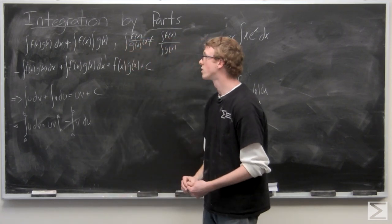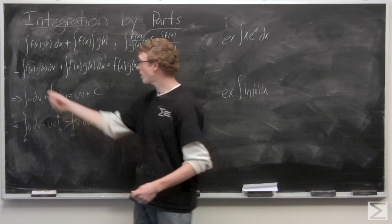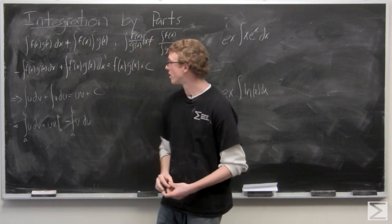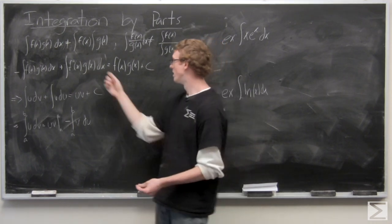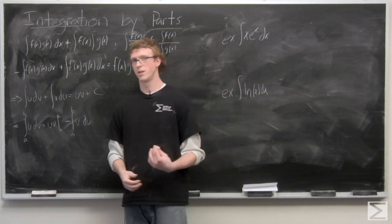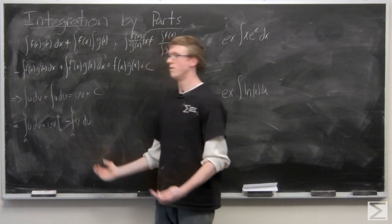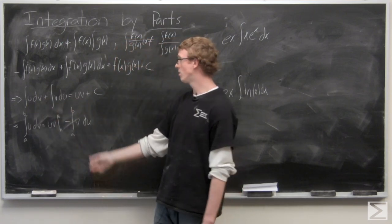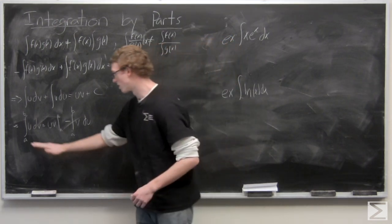A way to work with such functions is integration by parts. The complex-looking version states: the integral of a function times the derivative of another function dx, plus the integral of that first function's derivative times the second function dx, equals the two functions multiplied by each other plus a constant. This is easier to see when we set the functions equal to u and v, writing u dv and v du. So u dv plus v du equals uv plus C, or with bounds, we apply a subtraction form.